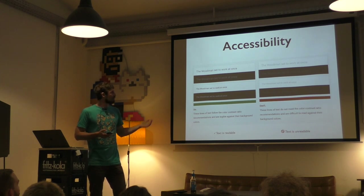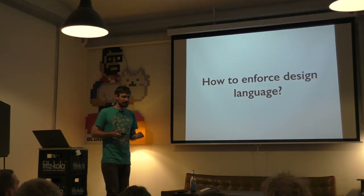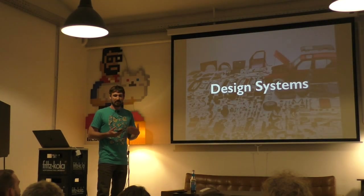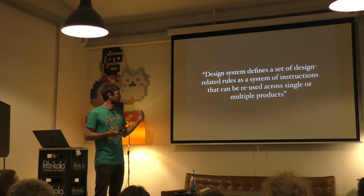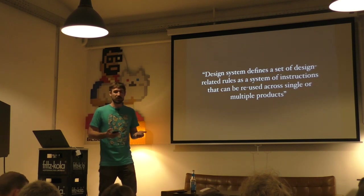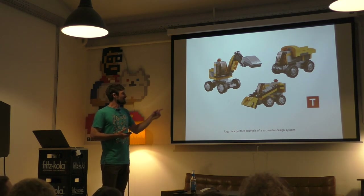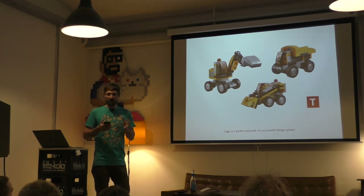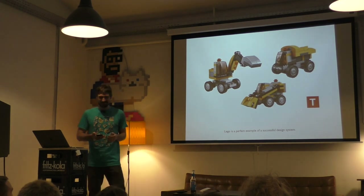It is important to follow all these things. The main question is: how do we enforce them across the product? How do we make them consistent? The answer has been — and still is — design systems. A design system defines a set of design-related rules as a system of instructions that can be reused across single or multiple products. A great example of a design system is Lego — with the same set of bricks, you can build three different cars. How cool is that? It's an amazing design system.